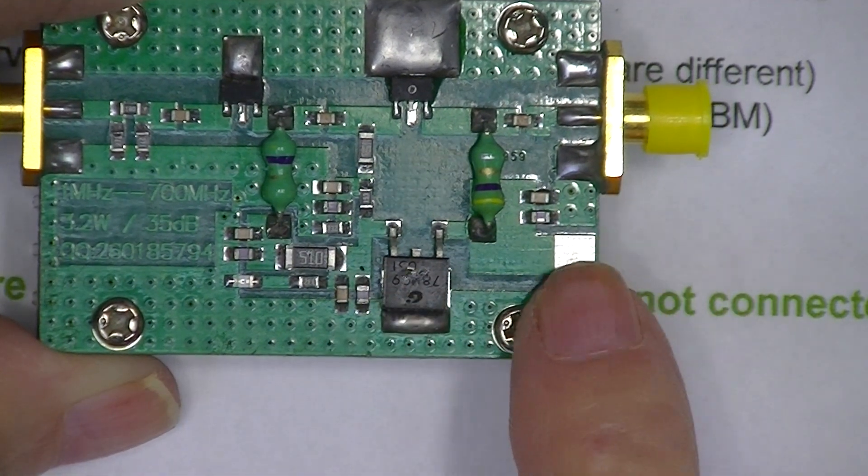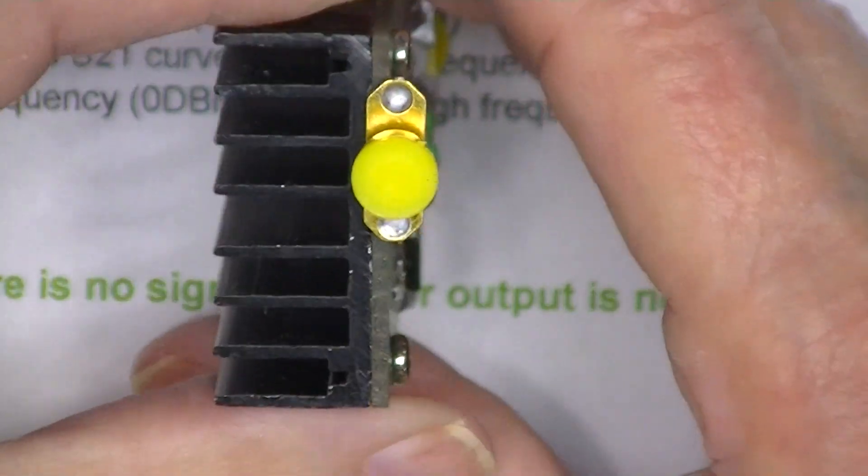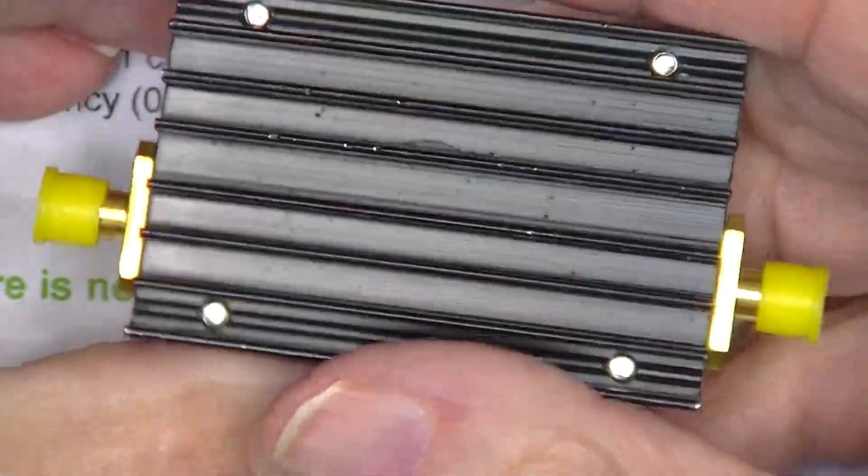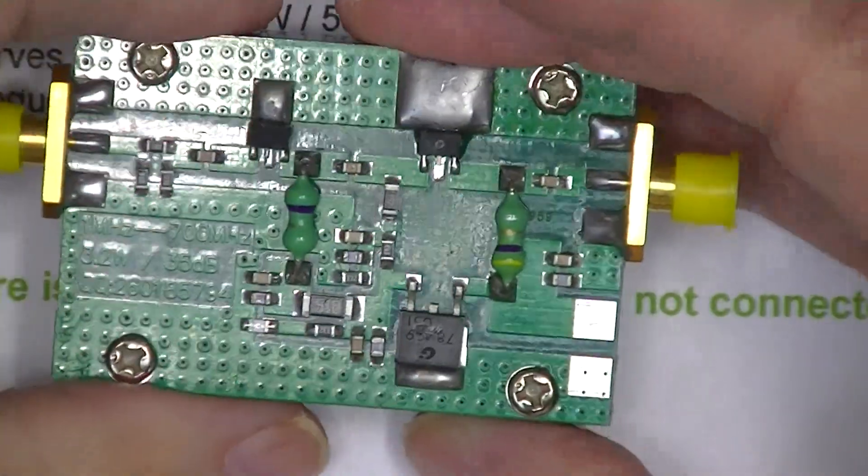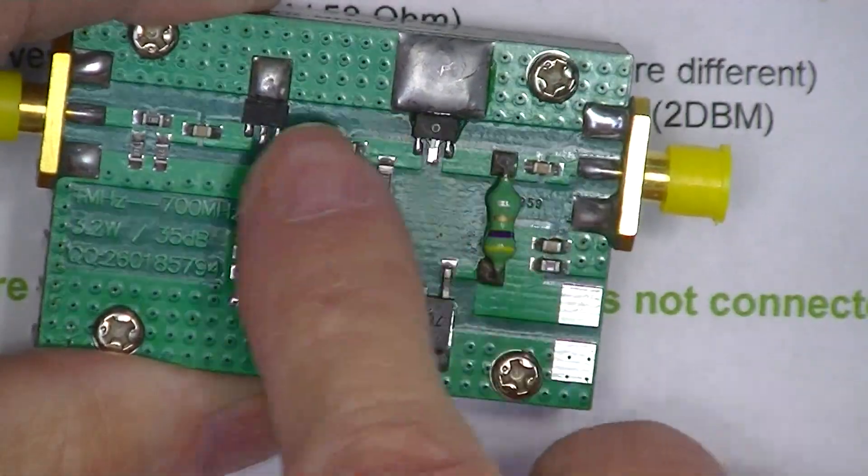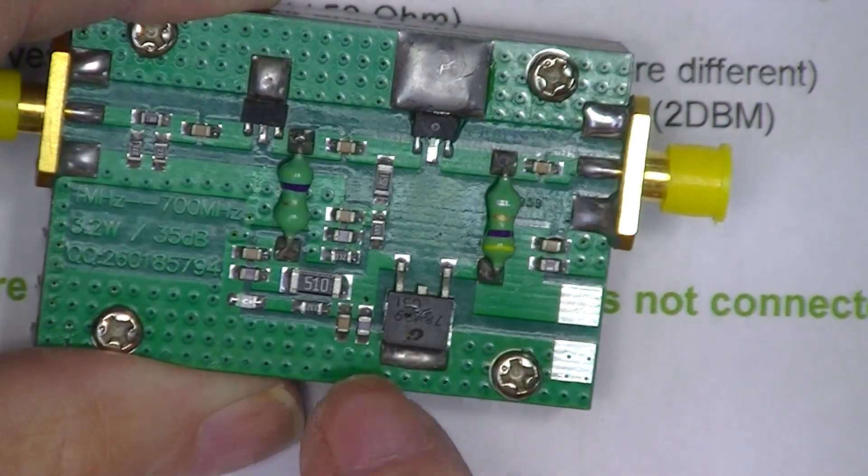7809, plus input, minus input. The whole thing is mounted on a heat sink. And before I power it up, I'll take it off and put some heat sink compound on the other side for these two devices here. Maybe for this one.